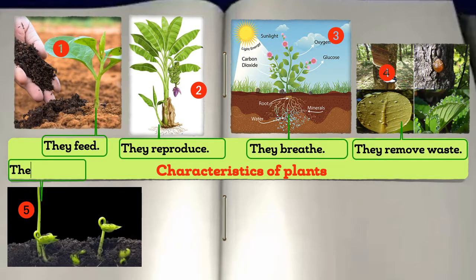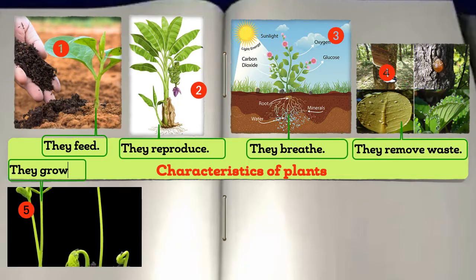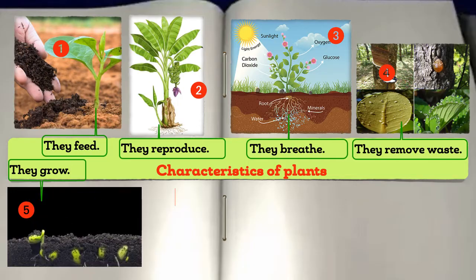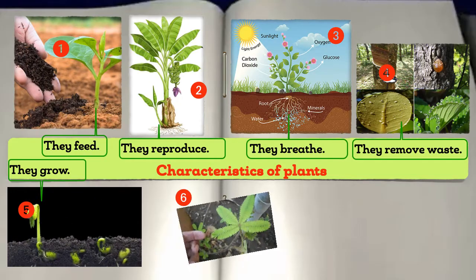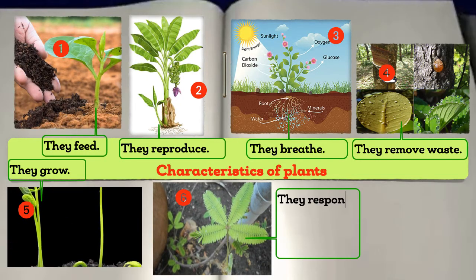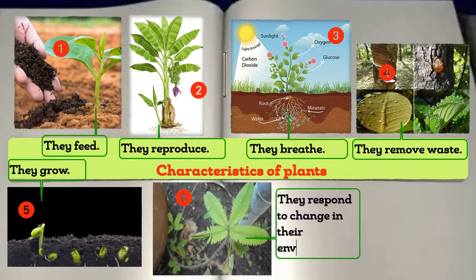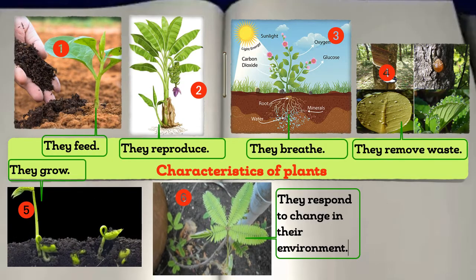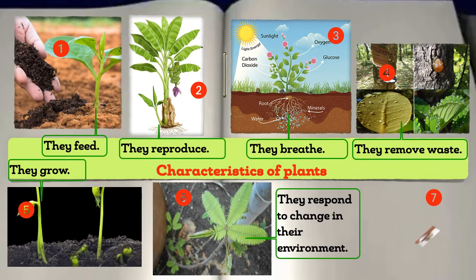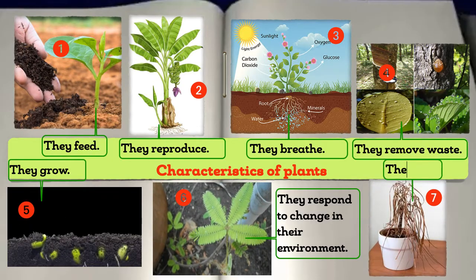5. Plants grow. 6. They also respond to change in their environment. And 7. Plants die. When the weather condition is not right for their growth, they wither and die.